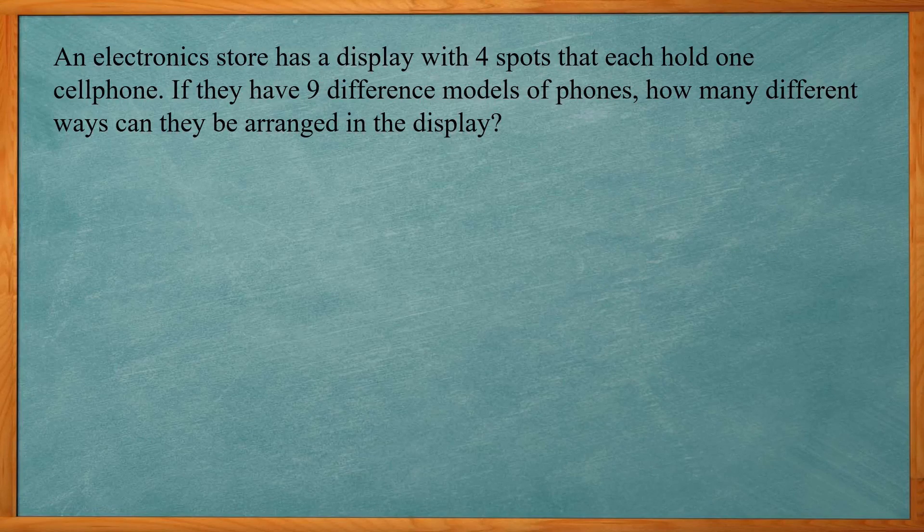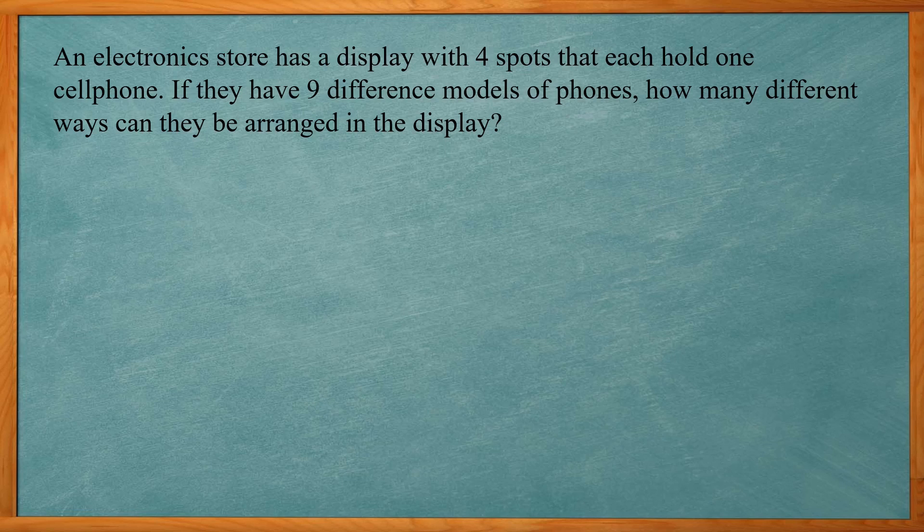So this reads, an electronics store has a display with four spots that each hold one cellphone. If they have nine different models of phones, how many different ways can they be arranged in the display?